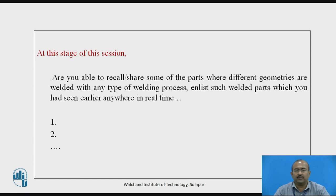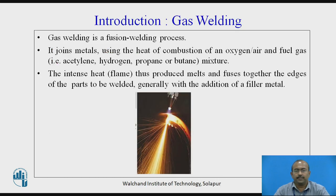At this stage of the session, are you able to recall or share some of the parts where different geometries are welded with any type of welding process? Let us enlist such welded parts which you have seen in real time. I hope you have enlisted the list of jobs which can be welded together. Let us go with gas welding — one particular type of gas welding we will explain in further due course.